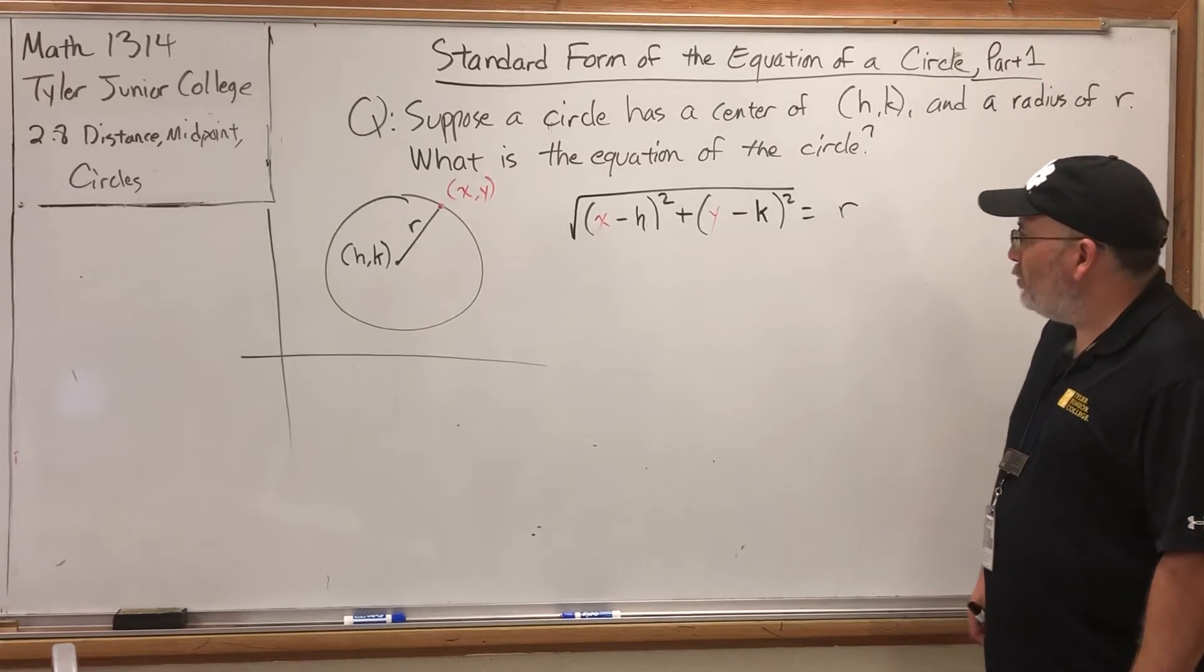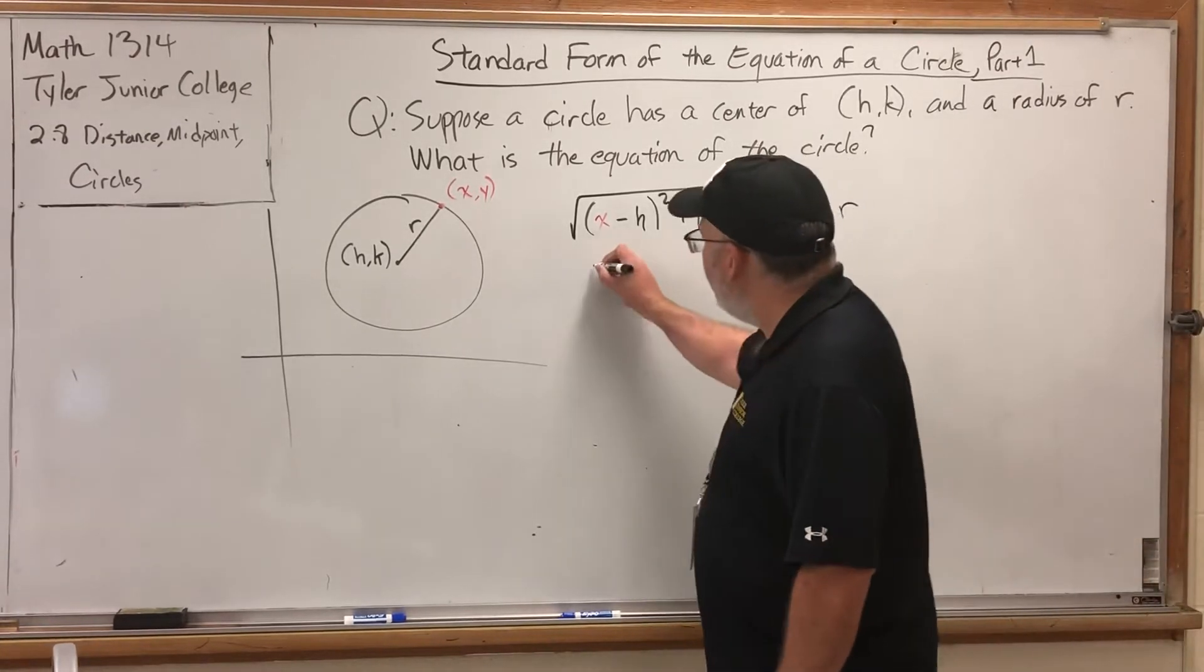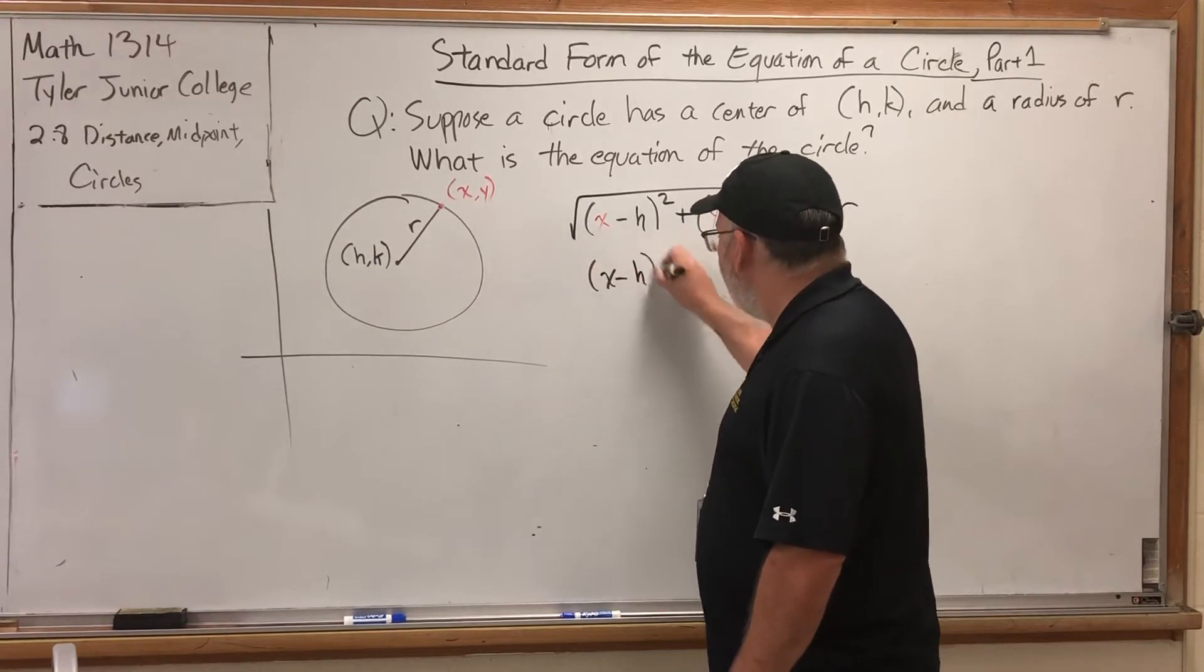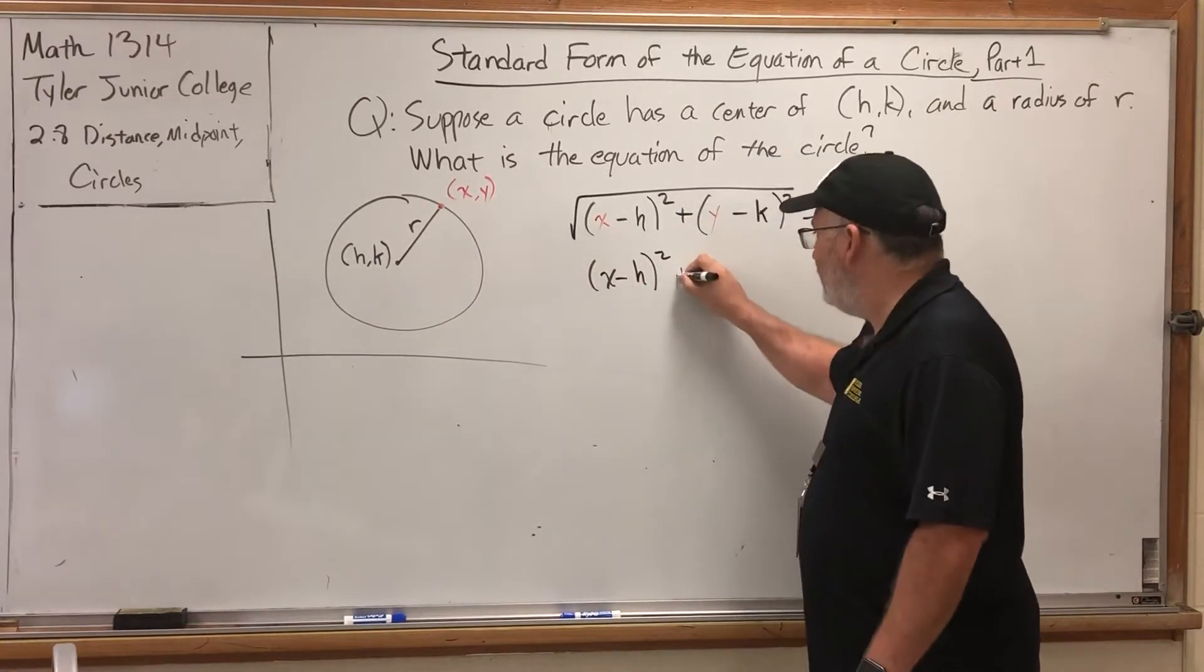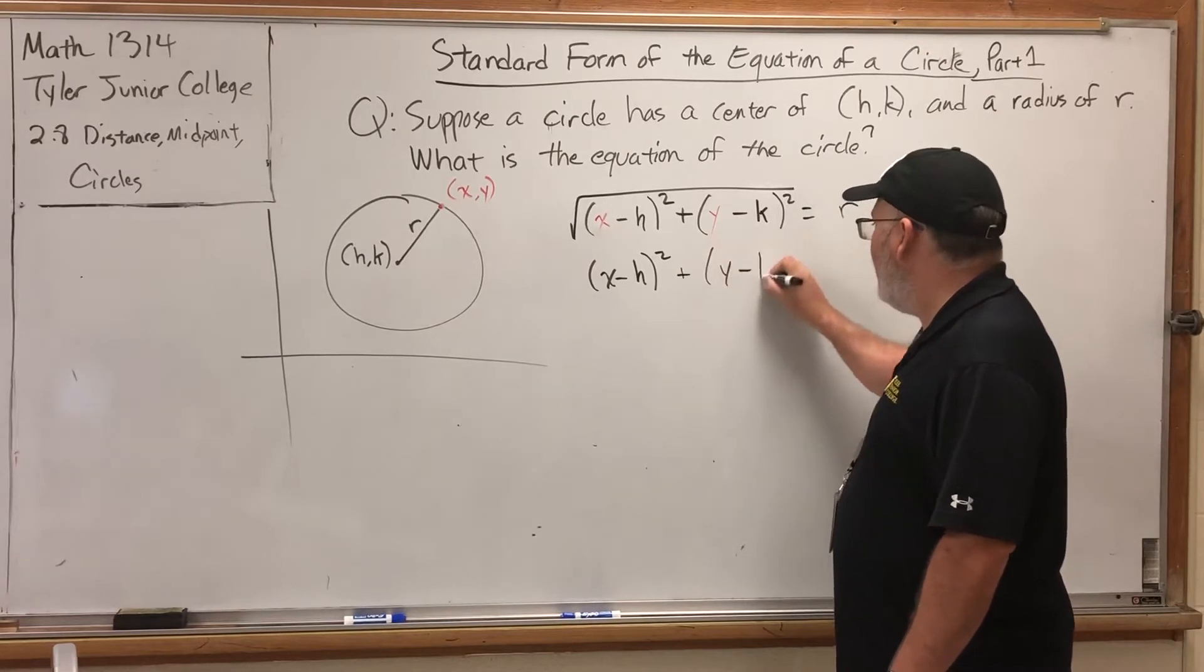If we square the left side of the equation, it will get rid of the square root. And we'll have in parentheses x minus h squared plus in parentheses y minus k squared.